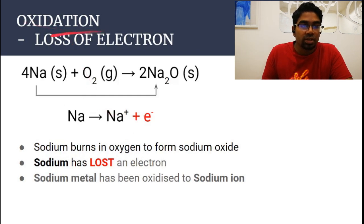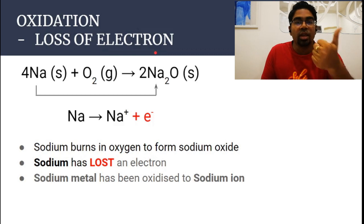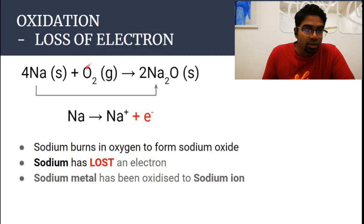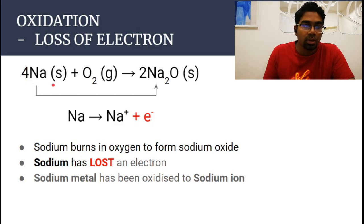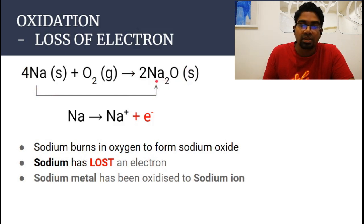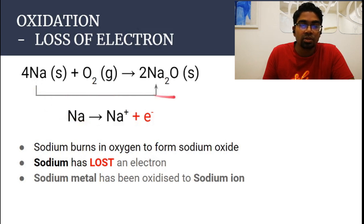We can also look at oxidation as the loss of electrons. So oxidation involves gain of oxygen, loss of hydrogen, and loss of electrons. Looking again at sodium with oxygen: sodium in its elemental state is neutral — it is an atom. Now it has lost an electron. Sodium oxide is an ionic compound, so sodium exists as Na+. Sodium has lost an electron to become Na+, so sodium metal has been oxidized to sodium ion by loss of electron.